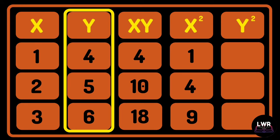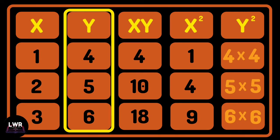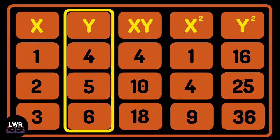And the same goes with y squared. We are going to do the same procedure, but we will use all the y variables: 4 squared, or 4 times 4, is equal to 16; 5 squared, or 5 times 5, is equal to 25; and 6 squared, or 6 times 6, is equal to 36.